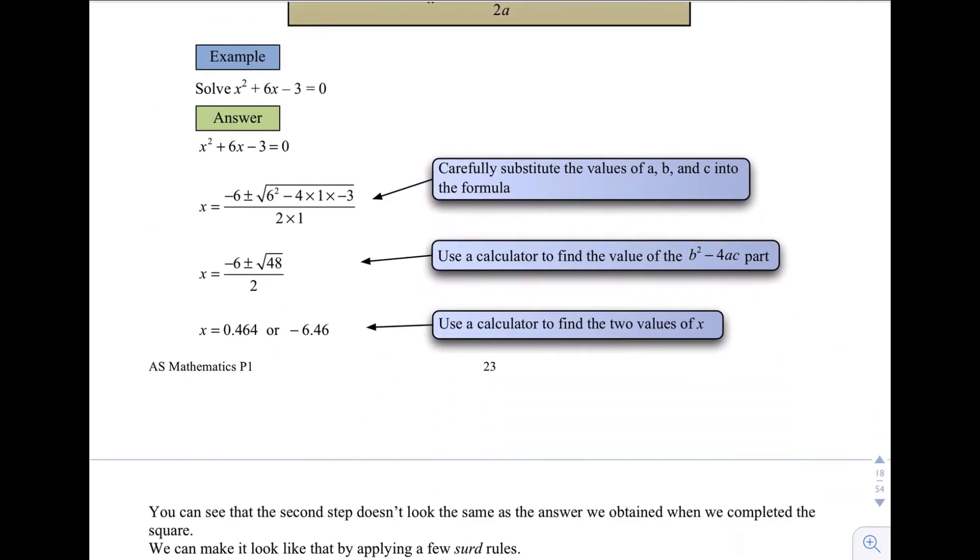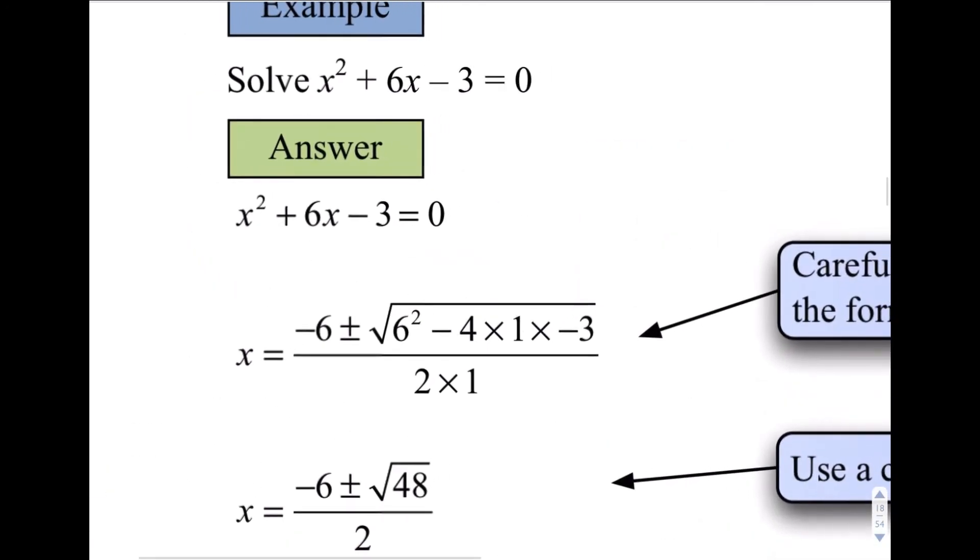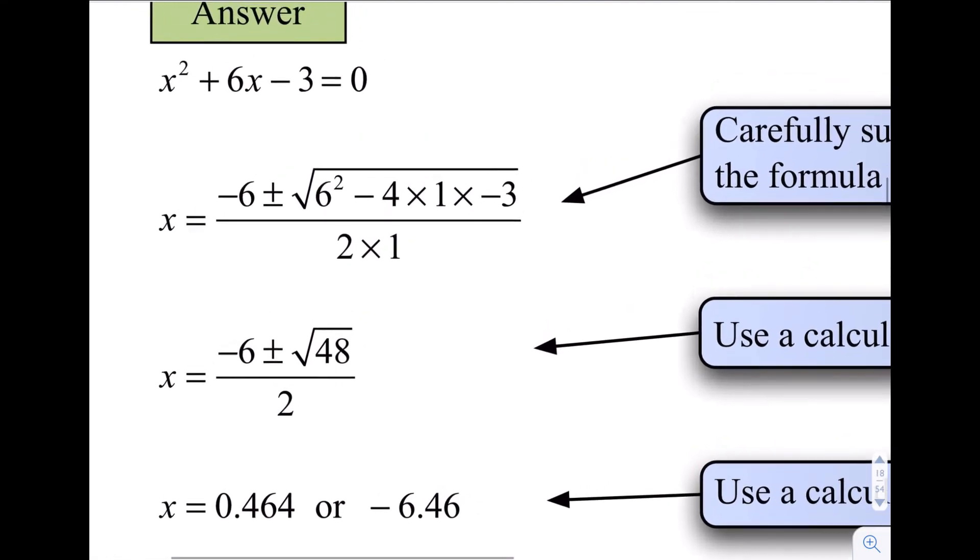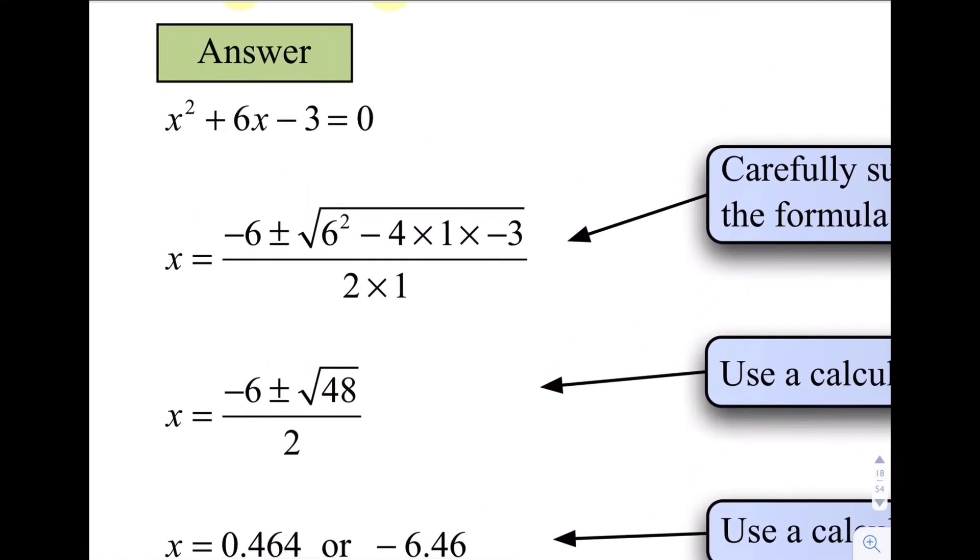So if we get this one here, x squared plus 6x minus 3 equals 0, then a is equal to 1, that's the number in front of the x squared, b is equal to 6, and c is equal to negative 3, and then you just carefully substitute those in. Okay, negative b plus or minus the square root of b squared minus 4ac over 2a. So I've just substituted those three values in. Work out next what is underneath that square root sign. So do this calculation here on your calculator or in your head.